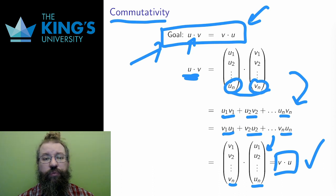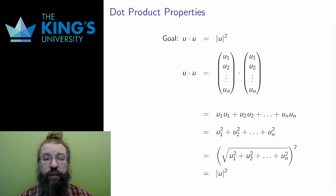Let me do another. One of the properties of the dot product is that the dot product of a vector with itself is the same as its length squared. Why is this true?